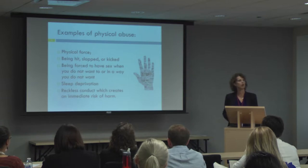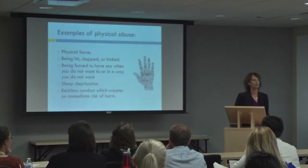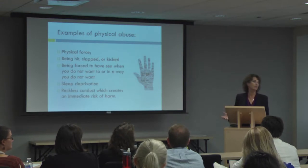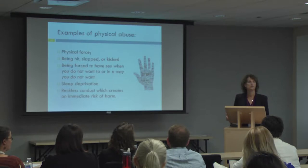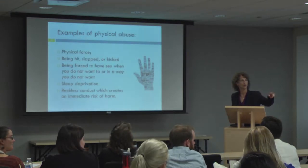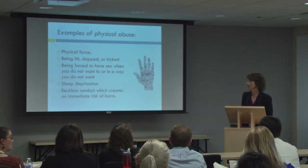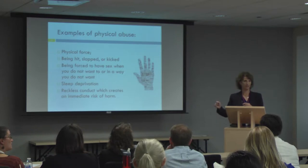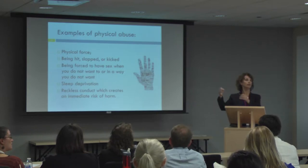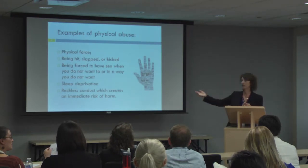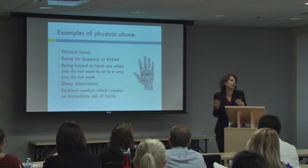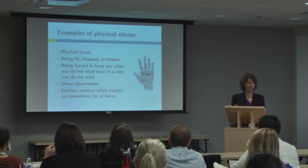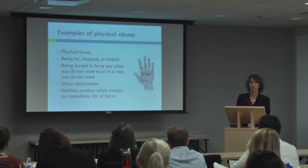Reckless conduct that creates an immediate risk of harm is also abuse. You're not actually harmed, but there's an immediate risk of harm. For example, we sometimes see people in the passenger seat of a car who go to get out, and the driver slams on the accelerator so they're hanging onto the door for a block, frightened out of their mind. In the end, they're not harmed — they get out safely — but the conduct was so reckless that it created an immediate risk of harm. That is included in the definition of abuse under the IDVA, the Illinois Domestic Violence Act.